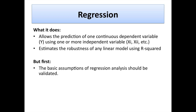So firstly, what does regression do? It allows us to make a prediction of one continuous variable, i.e. our dependent variable y, using one or more independent variables. In simple linear regression, we normally have just one independent variable, but we can extend this to two or more in multiple linear regression.